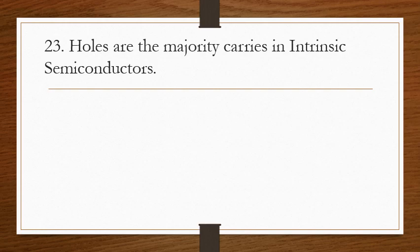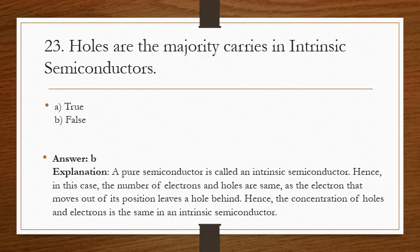Question 23: holes are the majority carriers in intrinsic semiconductors — true or false? The answer is B, false. A pure semiconductor is called an intrinsic semiconductor. In this case, the number of electrons and holes are the same, as the electron that moves out of its position leaves a hole behind. Hence, the concentration of electrons and holes are equal in an intrinsic semiconductor.